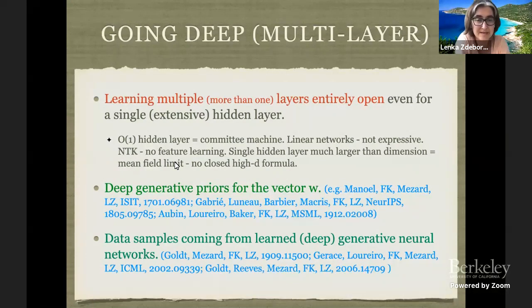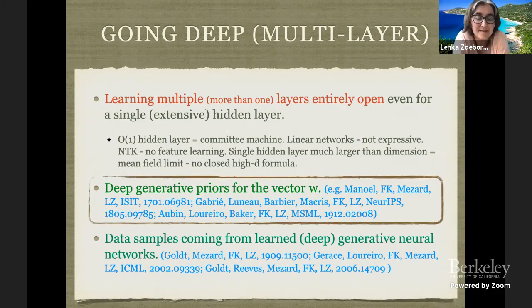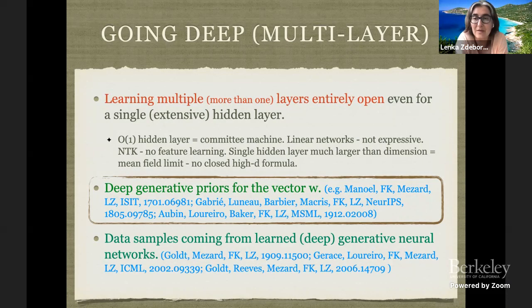There are two other points I will spend the rest of this last lecture on that are actually connected to deep learning. The first is deep generative priors for the vector w, which is quite a popular topic these days in the imaging community.